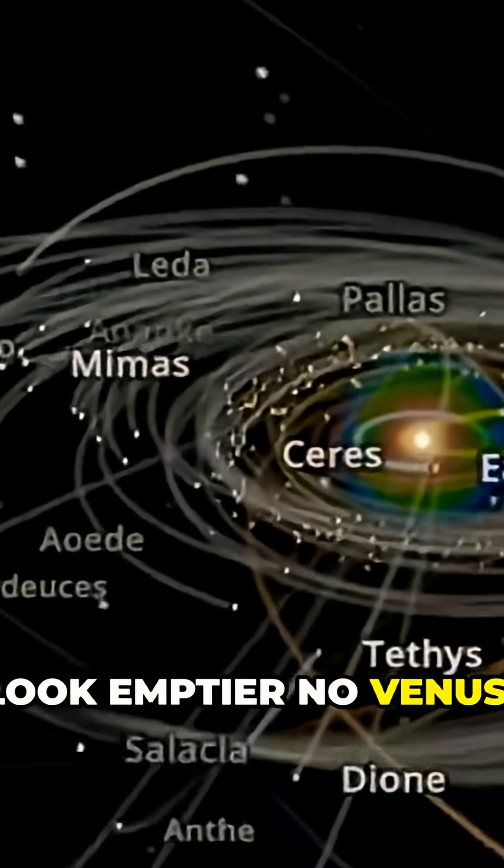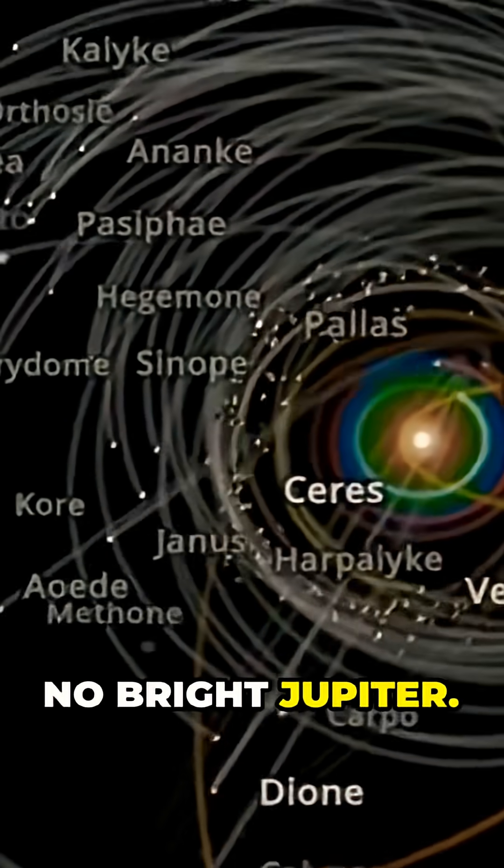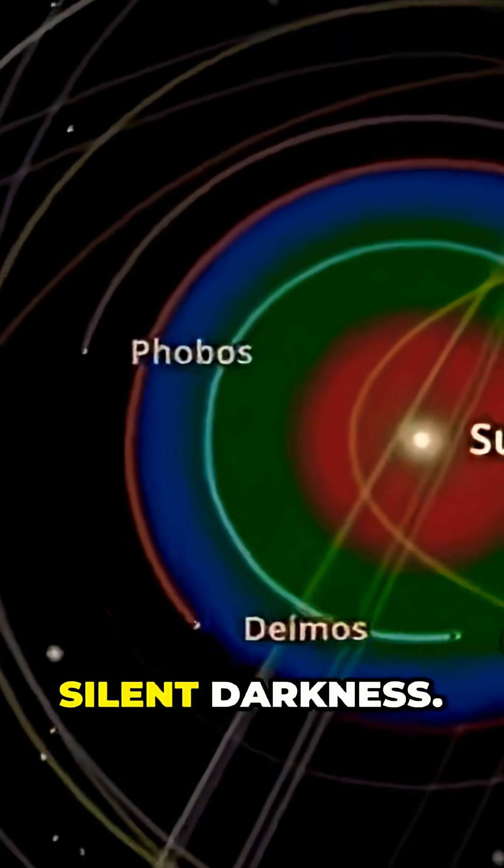The night sky would look emptier, no Venus, no Mars, no bright Jupiter, just the moon and distant stars in silent darkness.